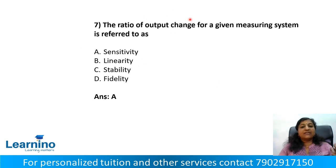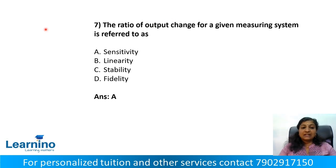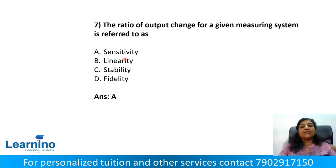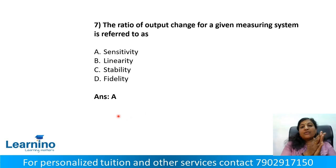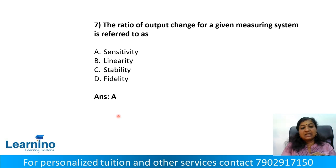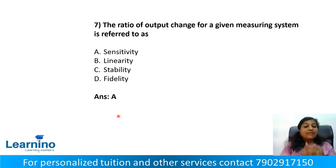Question number 7. The ratio of output change for a given measuring system is referred to as sensitivity. The ratio of output change for every change in the variable we are observing gives the same change in the output. The stability of an instrument is to maintain a certain physical property at a constant value.